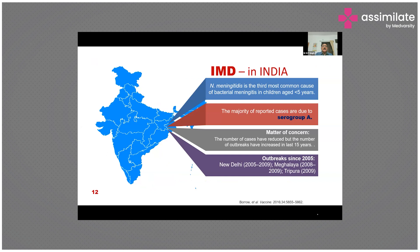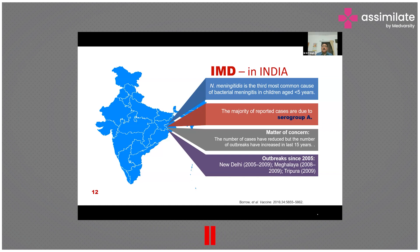Regarding the Indian scenario, Neisseria meningitidis is the third most common cause of bacterial meningitis among children under five years of age, and about 1.9% of all meningitis cases regardless of age are attributable to this infection. The majority of reported cases are due to serogroup A, while serogroups B and C are also reported in rare cases. Although the number of cases and fatality rates have reduced, there has been an increase in IMD outbreaks throughout India, more commonly in the temperate northern region.